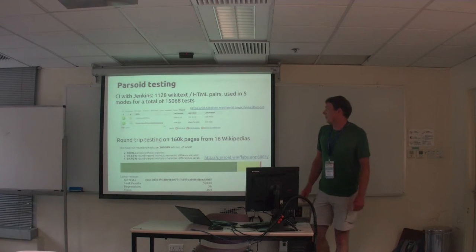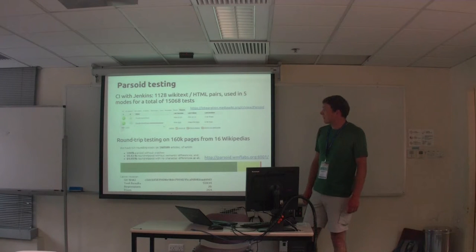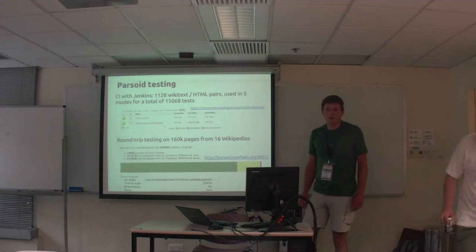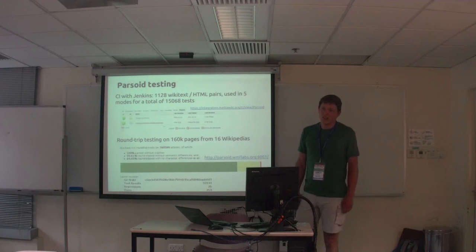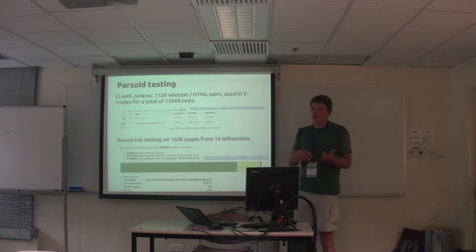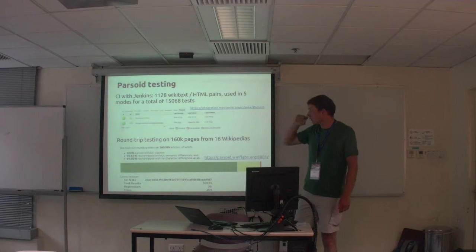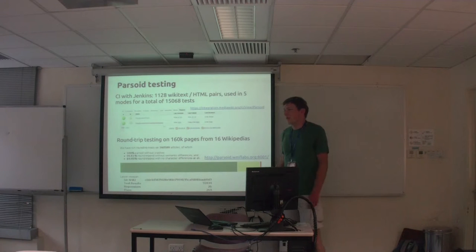The complexity of wiki-text means we have to do a lot of testing. Round-trip testing is used to identify issues, and we've used it a lot to add missing test cases. Initially we had about 400 tests; now we're at roughly 1,100. We also run them in different directions: wiki-text to HTML, HTML to wiki-text, wiki-text to wiki-text, and simulating edits for selective serialization — for a total of roughly 15,000 tests run automatically before each deploy.